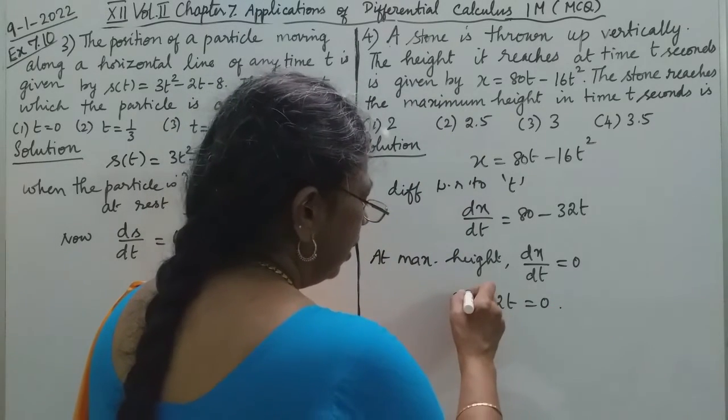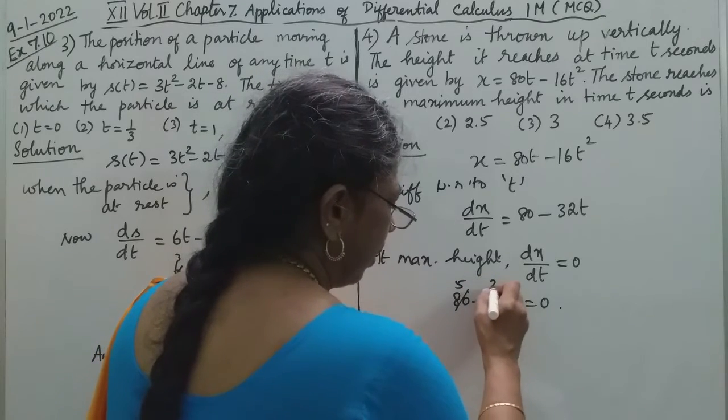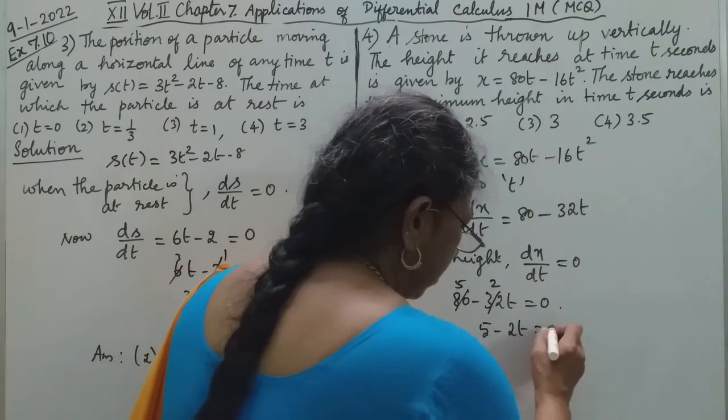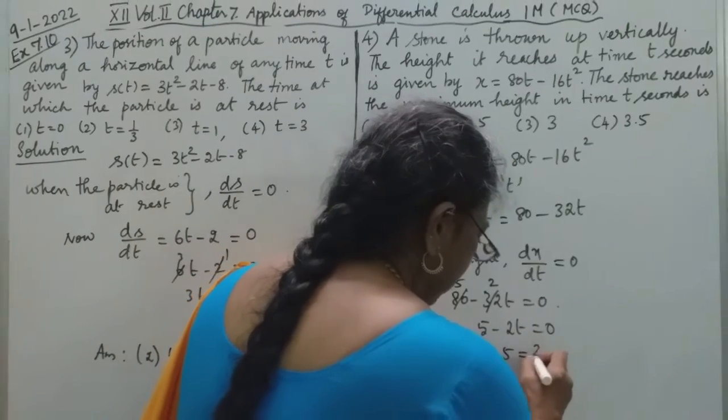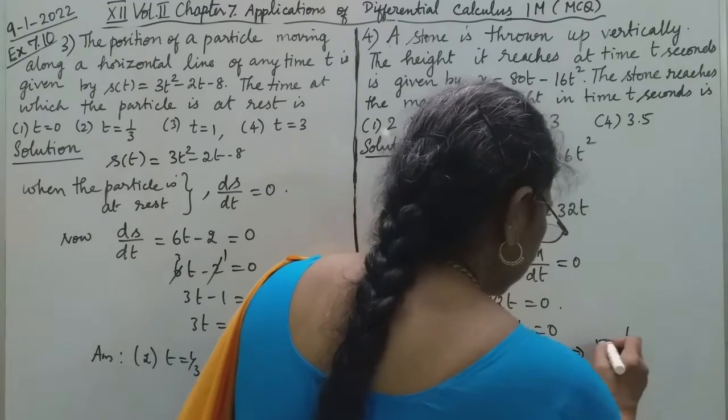Dividing both sides by 16: 5 - 2t = 0. So 5 = 2t, which gives us t = 5/2.